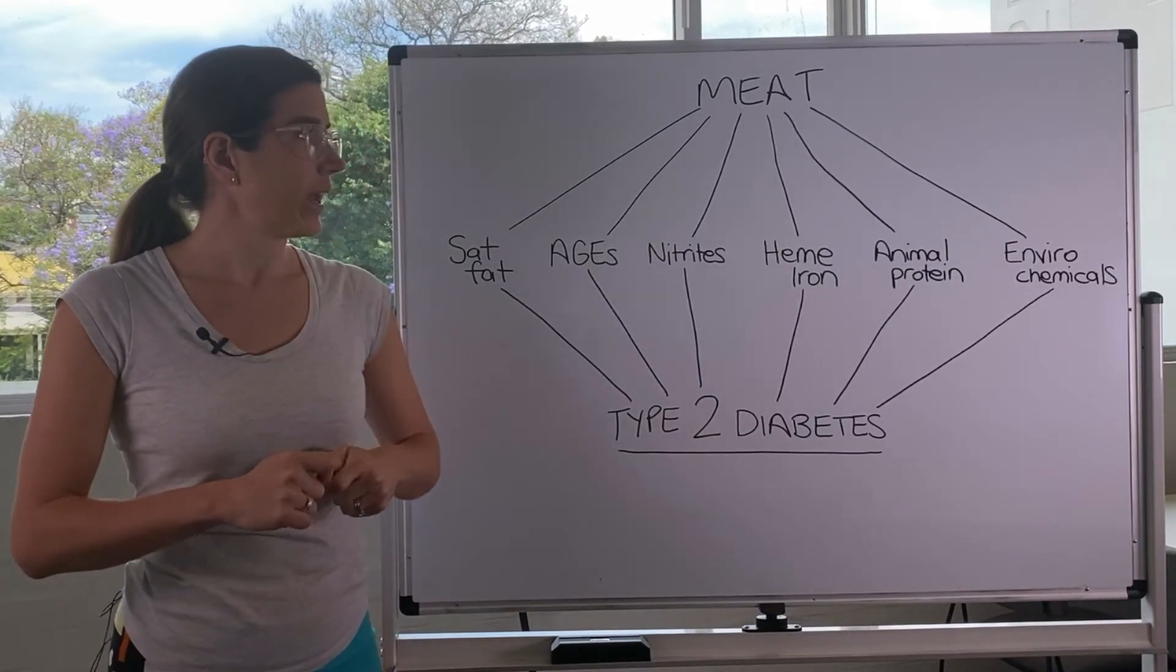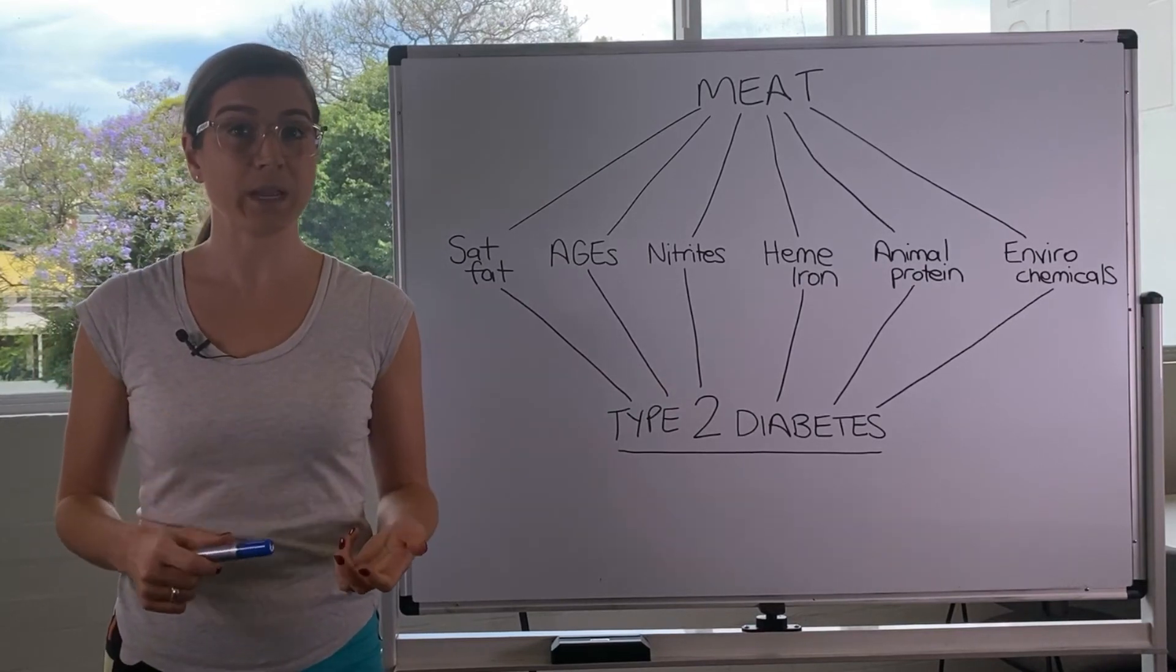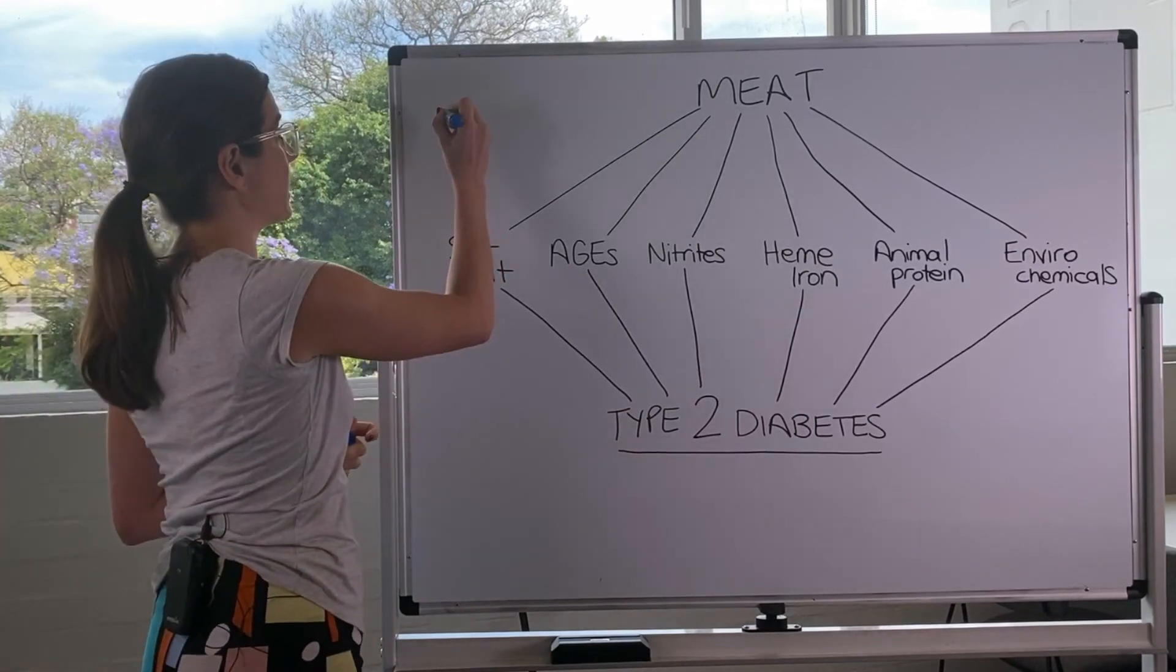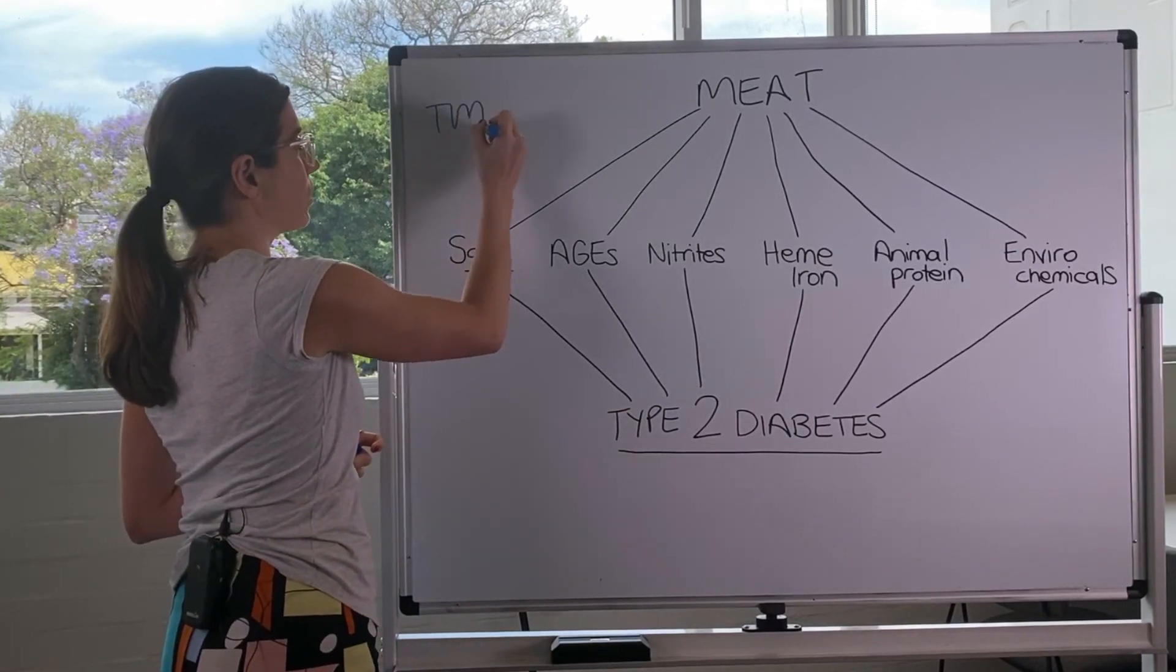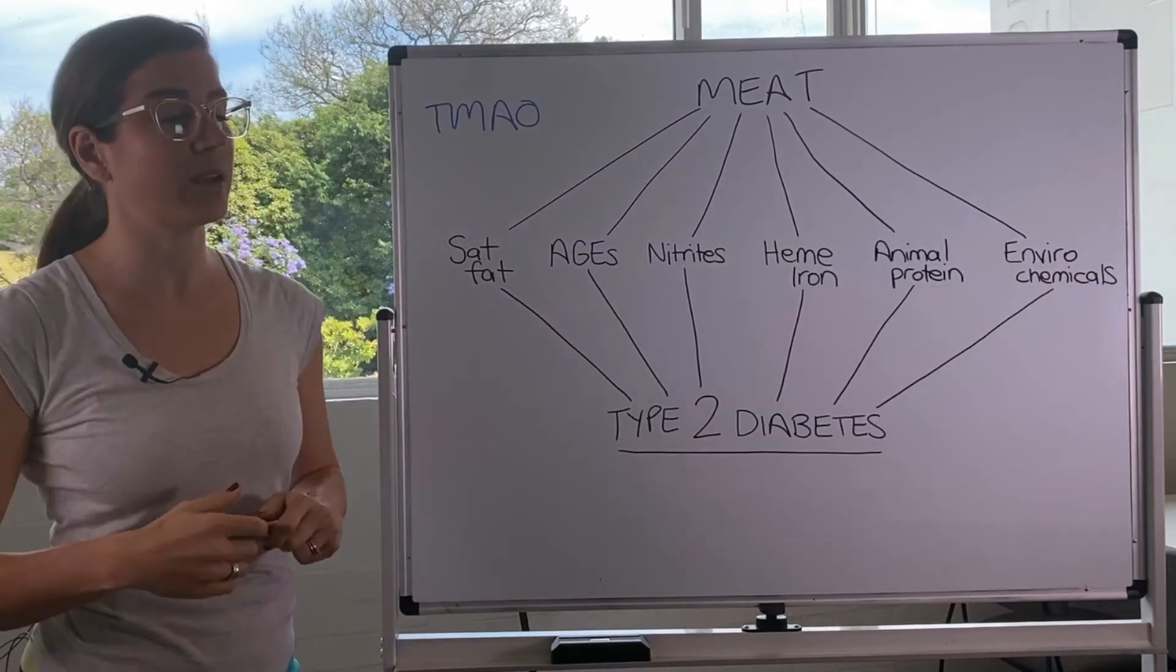Now another thing that doesn't necessarily increase the risk of type 2 diabetes, but it does increase the risk of cardiovascular disease, is a thing called TMAO or trimethylene oxide.